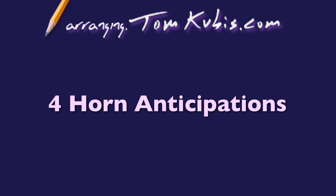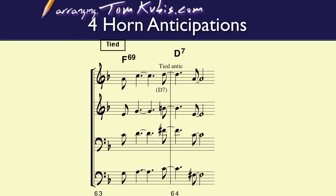In the sheet music, for example in bar 64, that D in the trumpet part — normally in the sheet music of Jada it starts on the downbeat of one, but I syncopated it a little bit. I anticipate it, so at the end of bar 63 that D is tied over. You'll hear it when I play the example, but that becomes the property of the D7, so even though it's in the F69 bar.